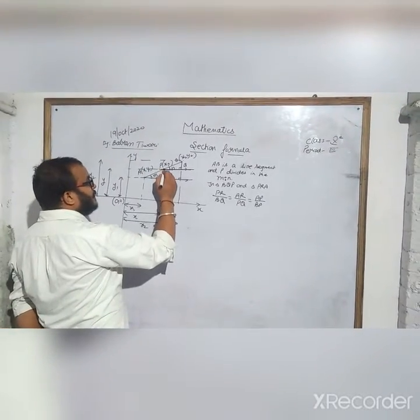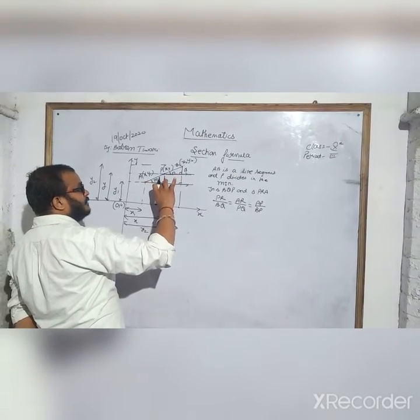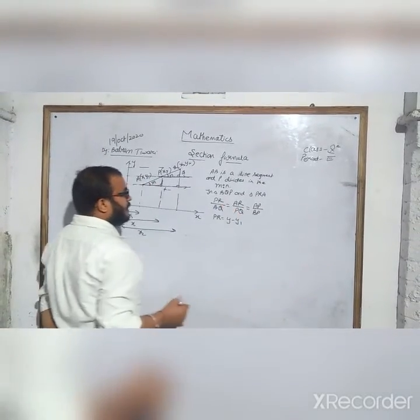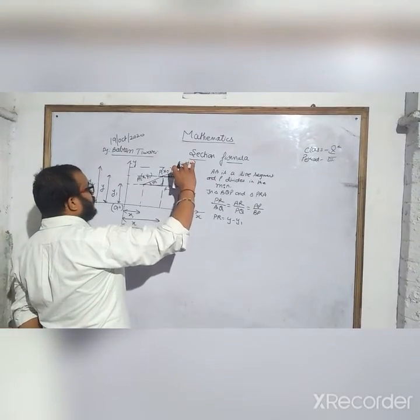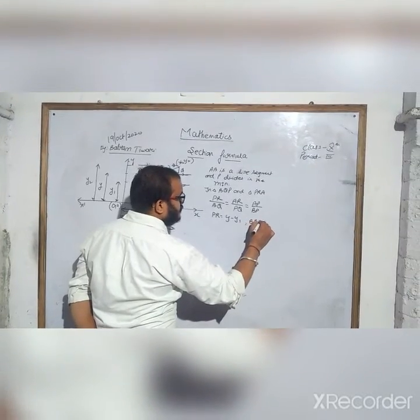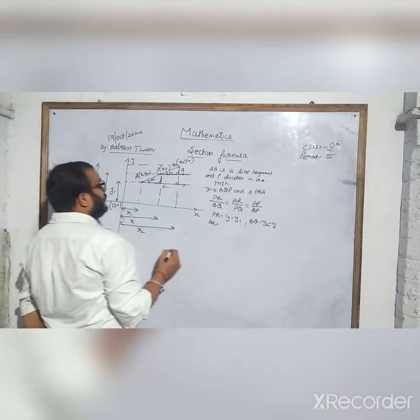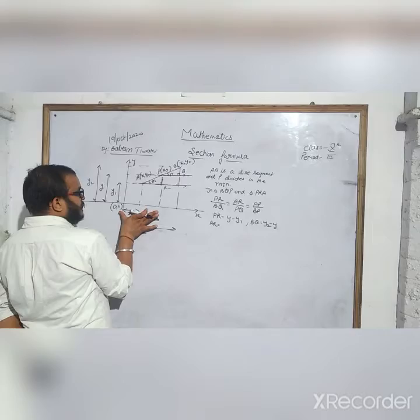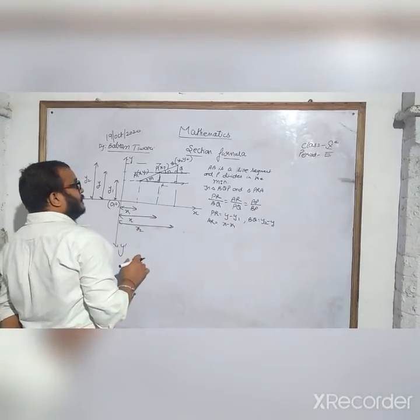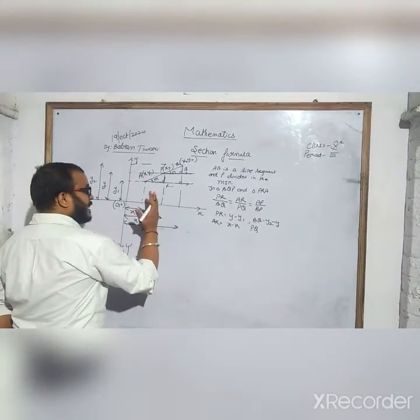So what's the PR is? PR is complete y. This is y. This is y1. So what's the PR become? PR is y minus y1. Same as what is BQ? Because y2 minus y. What is AR? AR is x minus x1. Same as what is PQ? PQ is x2 minus x.